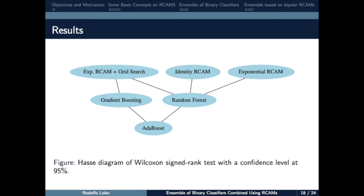Now, we follow Demsar's recommendation to compare multiple classifiers models using multiple datasets. The Friedman test rejected the hypothesis that there is no difference between the ensemble classifiers. To visualize this, we use Wilcoxon Signed-Rank test with a confidence level at 95%.